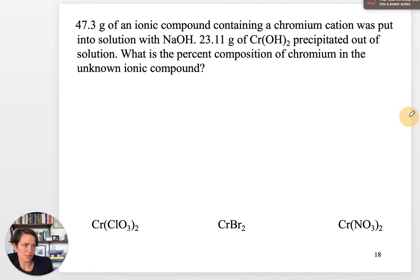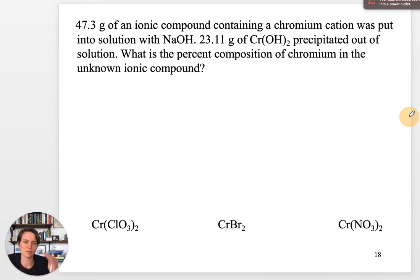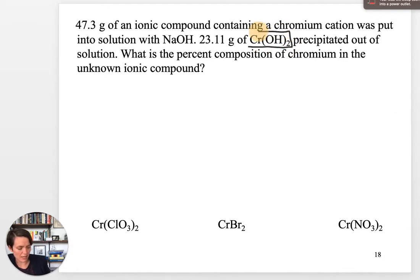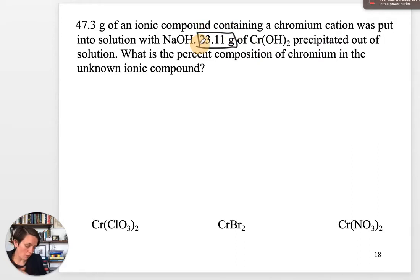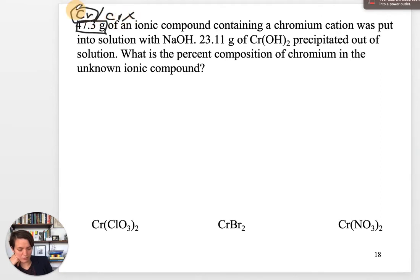That really illustrates the utility of percentages and the law of definite proportions. Because those proportions don't change for a given species — for chromium hydroxide, it's always two hydroxides for every one chromium — we can answer the question generally using the periodic table and molar mass, and then work with our sample masses to find the percent in the unknown compound. Lots of options there.